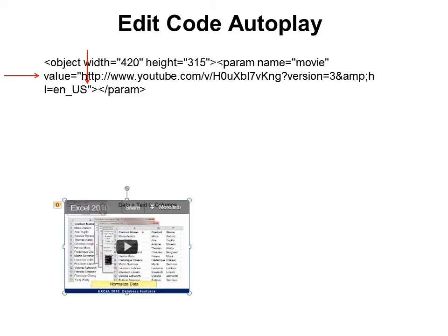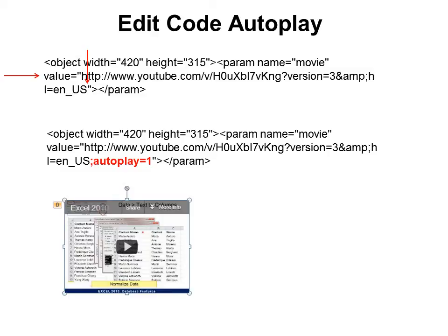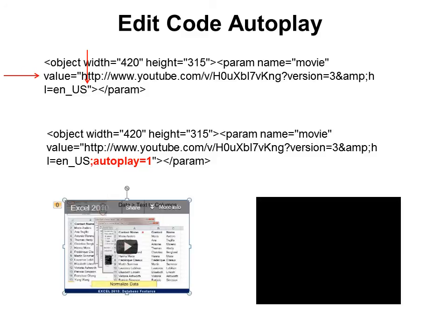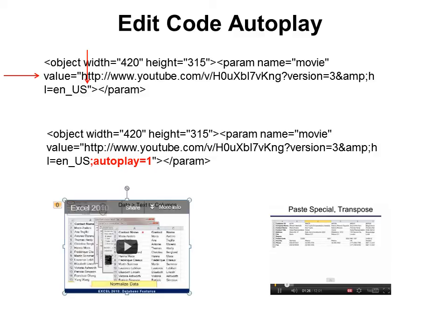You can also code to make it autoplay, and you can put this before or after the length. After 'value' and before the second set of double quotes, you would put in semicolon autoplay equals 1. That means yes, you want it to autoplay. So when you put that in, it will automatically play and you don't have to worry about clicking a button — it moves from having that start button from the black to playing.